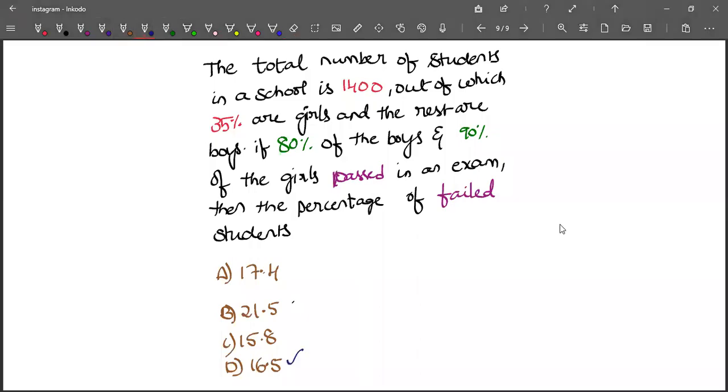The answer for this question is 16.5, let's see how it is. There are 1400 students and out of 1400, 35% are girls.